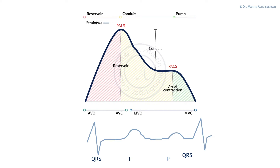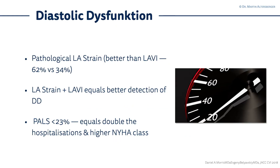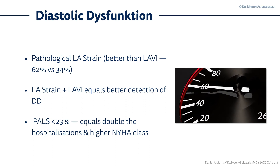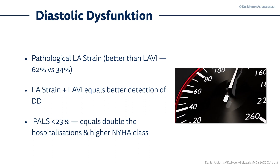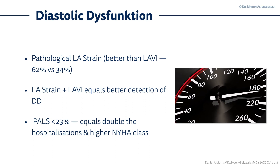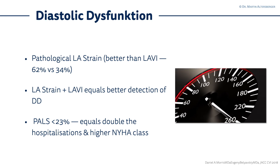This is how it looks: first the filling of the left atrium, then the filling of the left ventricle in diastole. Why would you measure LA strain in diastolic dysfunction? The LA strain, when pathological, is better than the left atrial volumetric index for identifying whether diastolic dysfunction is truly present. If you combine LA strain measurements with the LA volumetric index, you will have better detection of diastolic dysfunction.